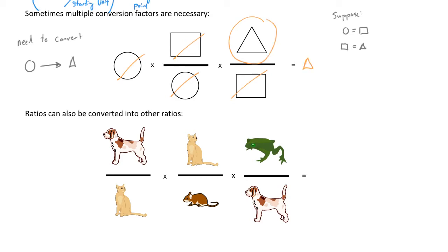Typically, we have a starting point that is not a ratio — circles is just circles, not circles over squares. But occasionally we also need to convert ratios into other ratios. When that happens, our starting point itself is a ratio. This doesn't change the process by which units are cancelled and converted. For example, cats would cross-cancel with cats and dogs would cross-cancel with dogs, leaving us the ratio of frogs to mice.